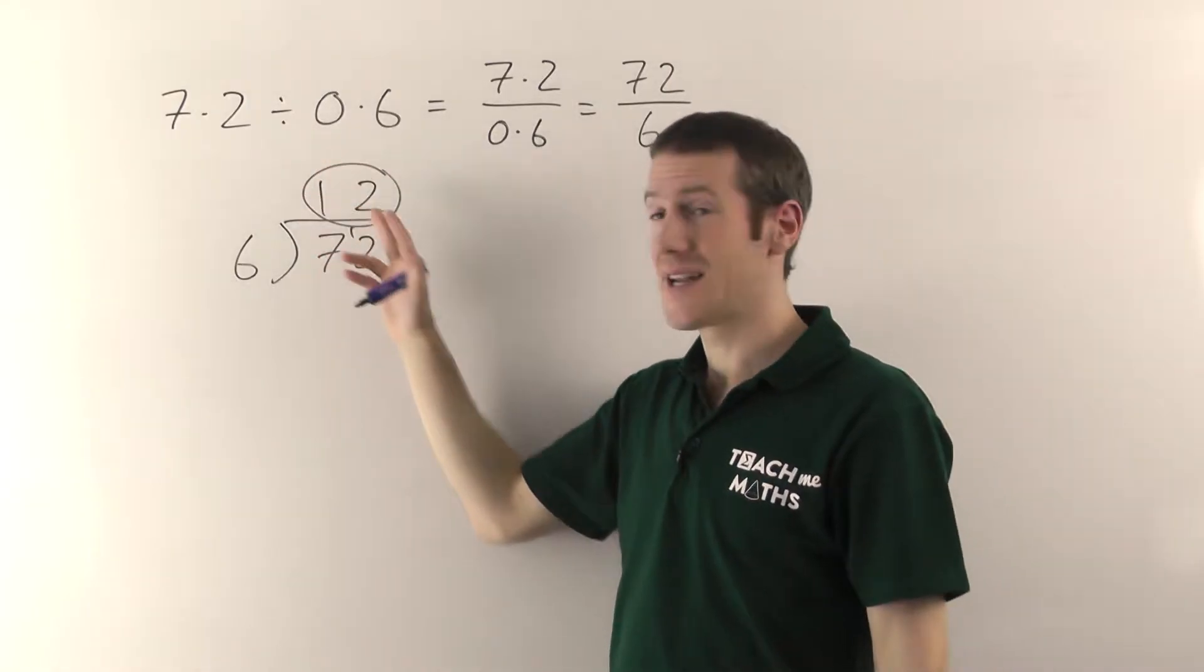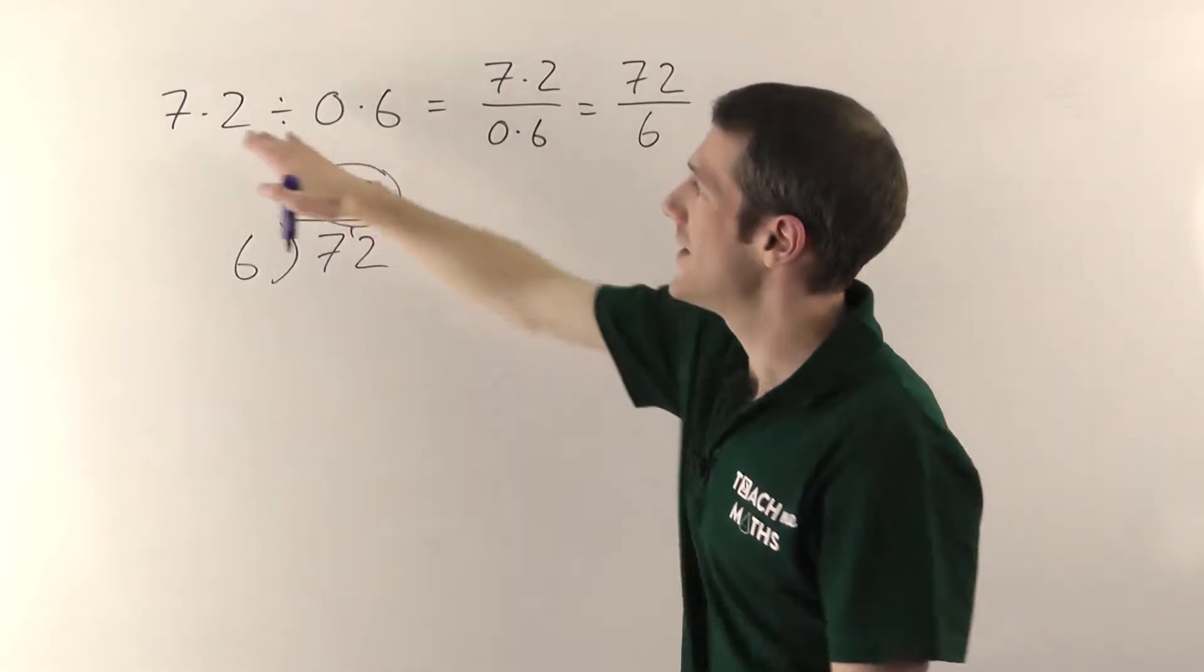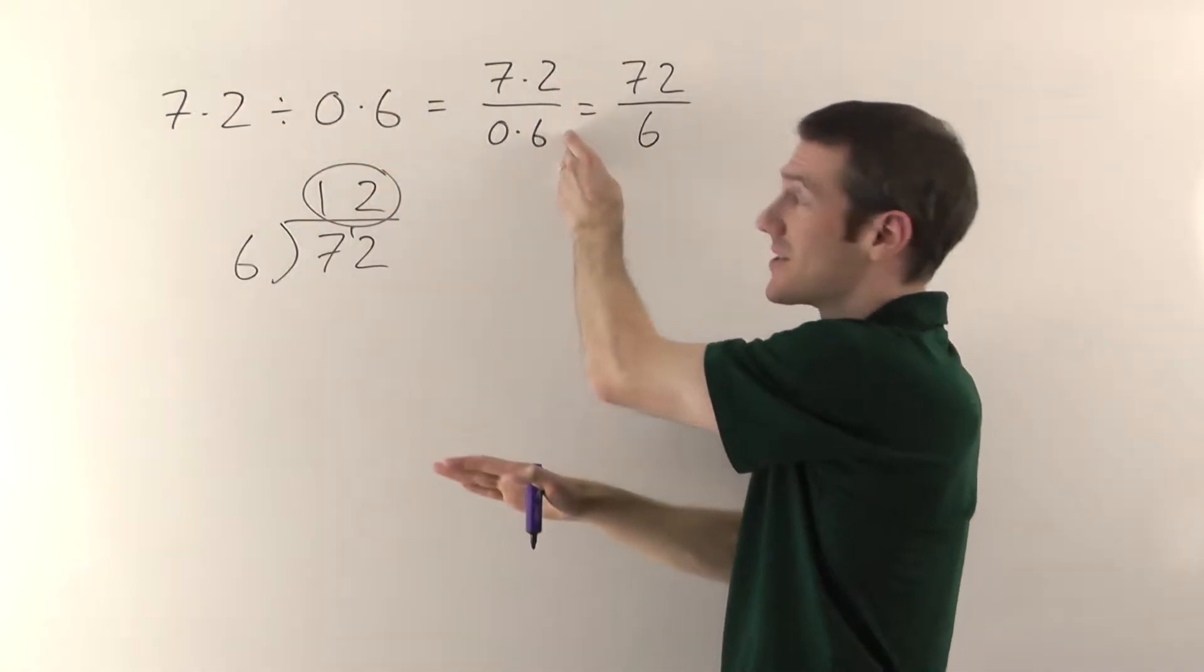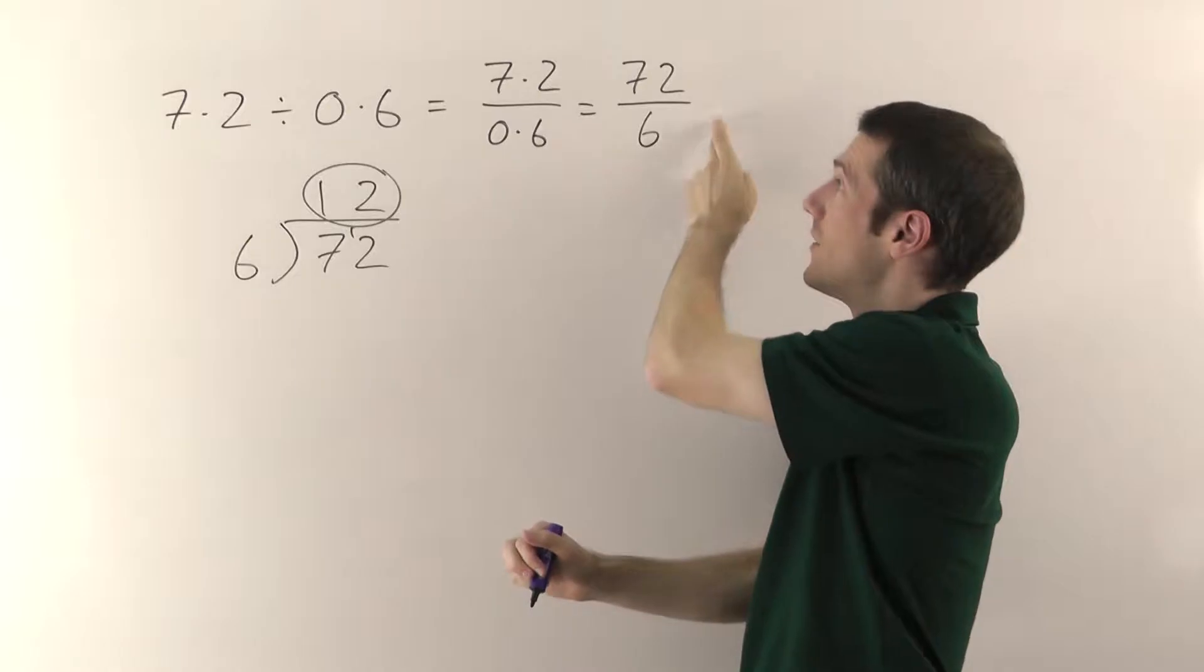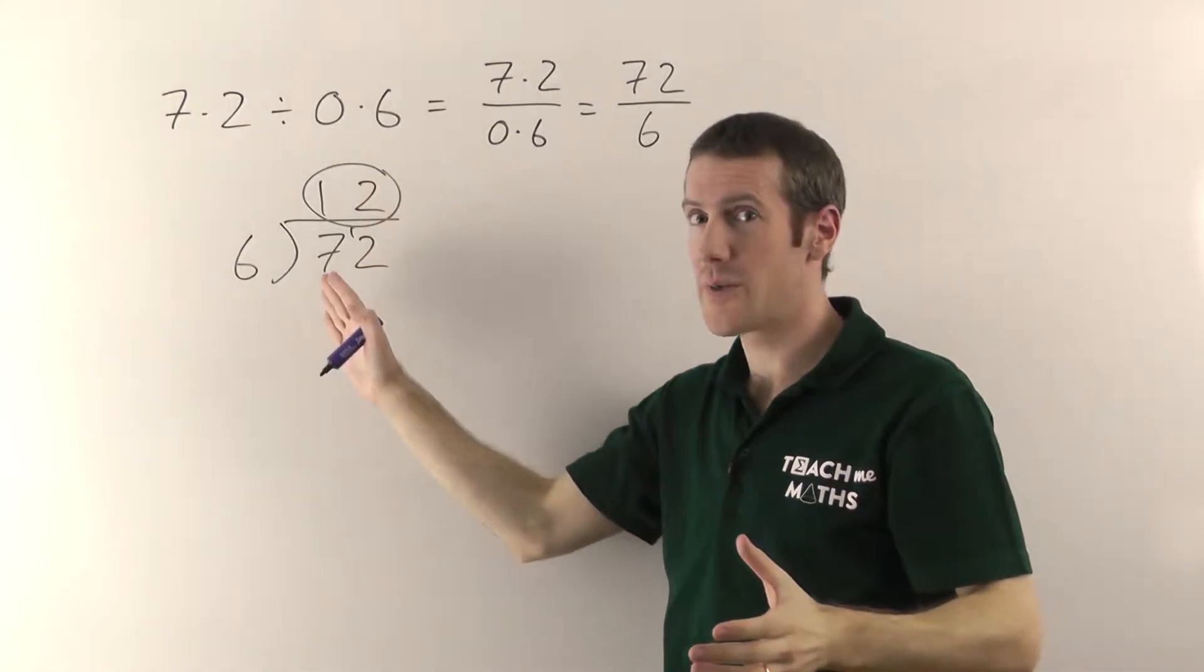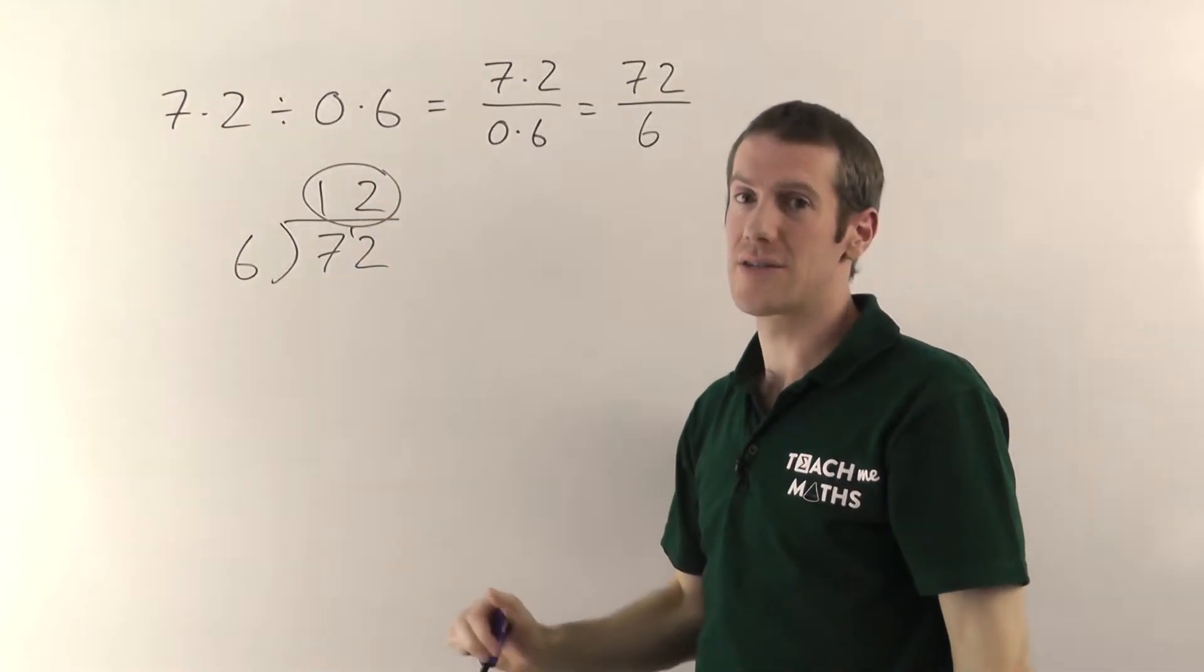You don't want to be putting any decimal points or anything back in there afterwards. This is the same as this fraction, which is the same as this fraction. And this fraction turns out to be 12 when you do the division. So don't be adding any decimal points back in. You just leave the answer as it is.